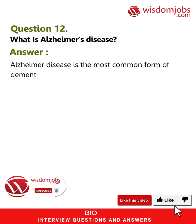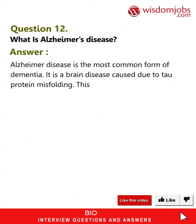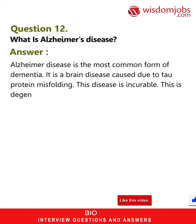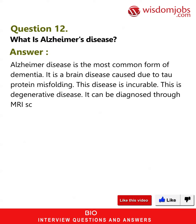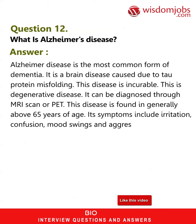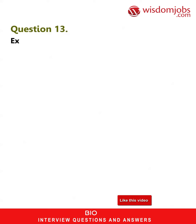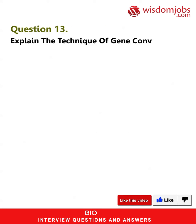Question 12: What is Alzheimer's disease? Answer: Alzheimer's disease is the most common form of dementia. It is a brain disease caused due to tau protein misfolding. This disease is incurable and degenerative. It can be diagnosed through MRI. This disease is generally found in people above 65 years of age. Its symptoms include irritation, confusion, mood swings, and aggression. This disease is named after German psychiatrist and neuropathologist Alois Alzheimer in 1906.